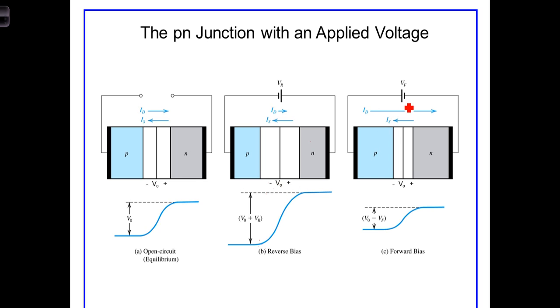When a forward-biased voltage is applied, the external voltage opposes the built-in junction voltage, and the depletion region shrinks in width. The voltage barrier becomes smaller, and the diffusion currents increase significantly, becoming a significant portion of the current flowing through the diode.